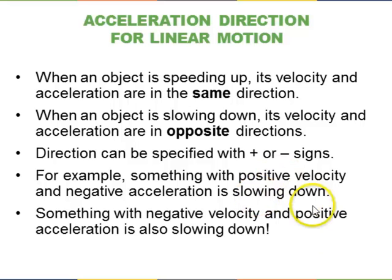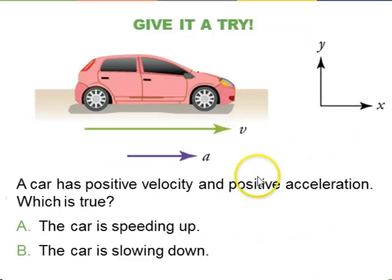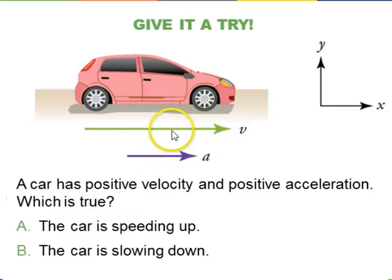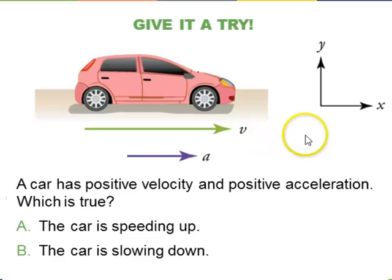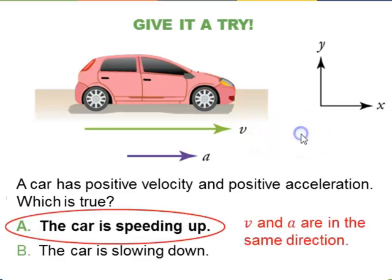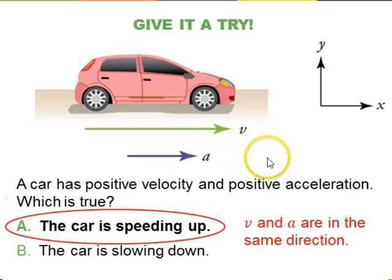Anytime the velocity and acceleration vectors are in opposite directions, the object is slowing down. If they are in the same direction, the object is speeding up. For example, if a car has positive velocity to the right and positive acceleration to the right, the velocity and acceleration are in the same direction — so the car is speeding up.